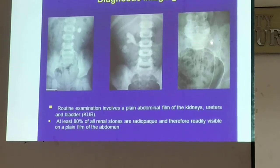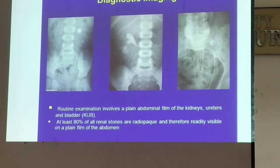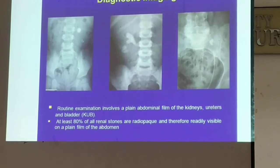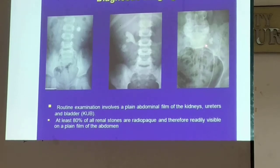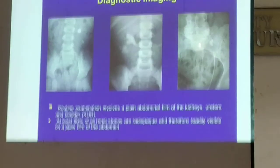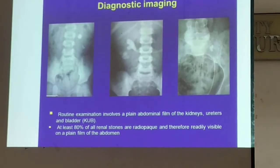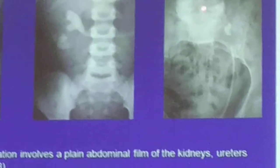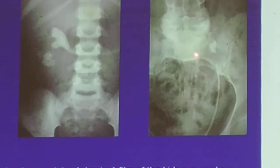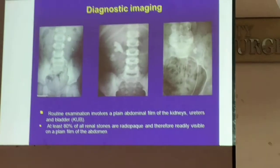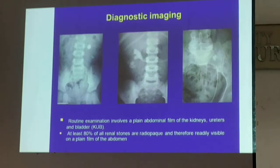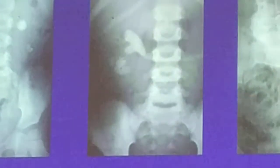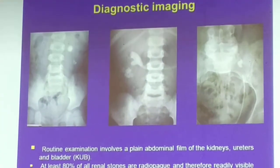Why would I say that this is a ureteral stone? Your landmark — it's already at the level of the sacrum. Usually the left kidney or right kidney is at L2. So the location is your guide. This is the pelvis. This is the left sacroiliac. So most likely this stone is seen at the left ureter.